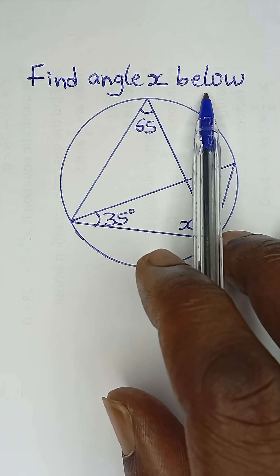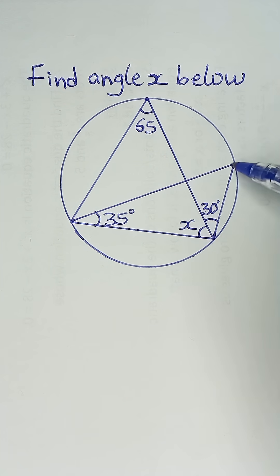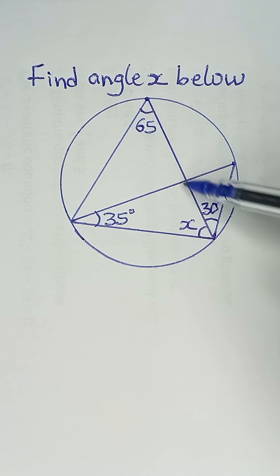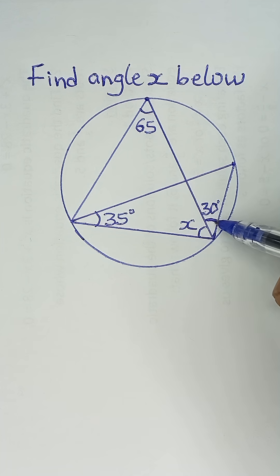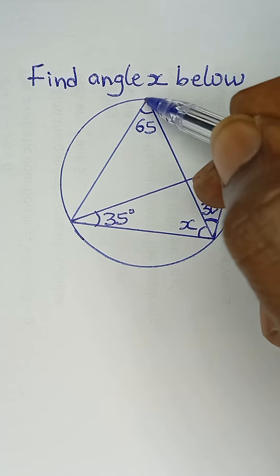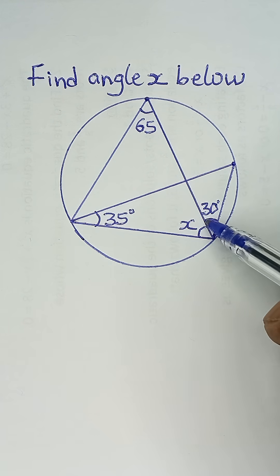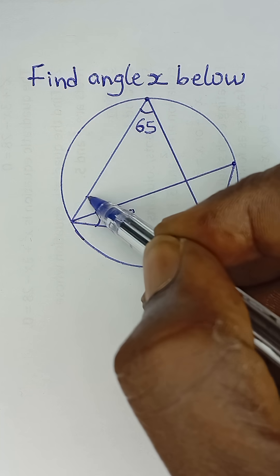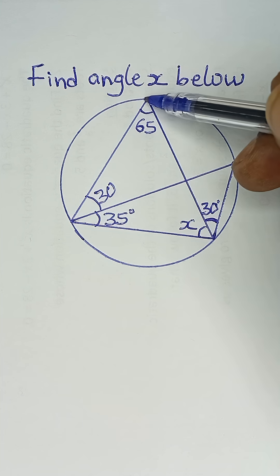Find angle x below. Now with reference to these two points, this angle of 30 degrees is made. Similarly, with reference to these two points, we have another angle at this side. So if this is 30 degrees, this will also be 30 degrees, since the two angles are coming from the same points.